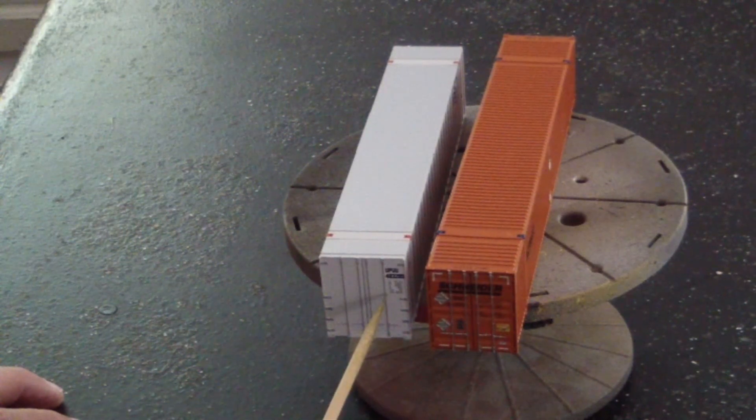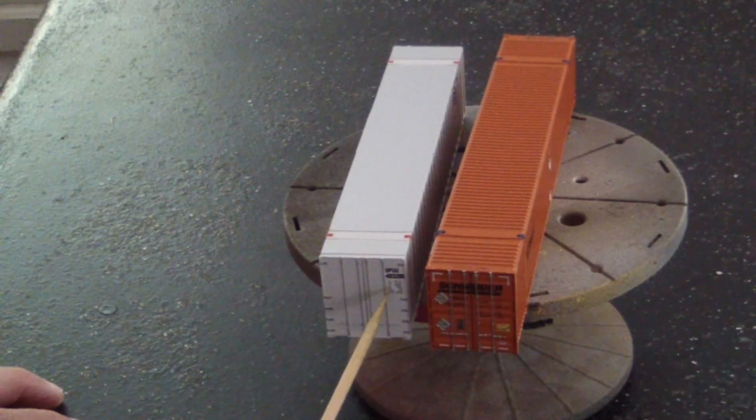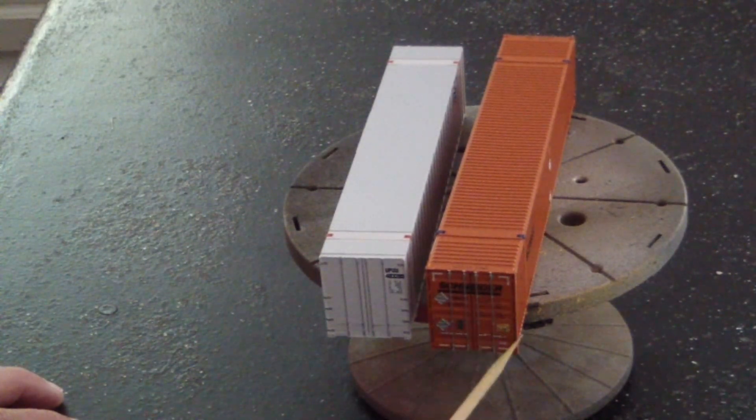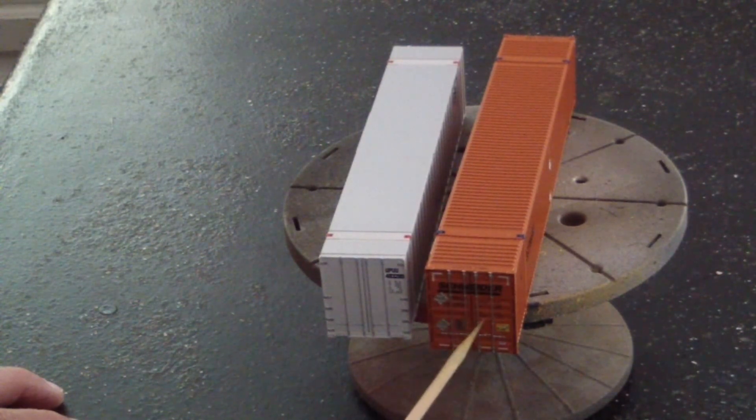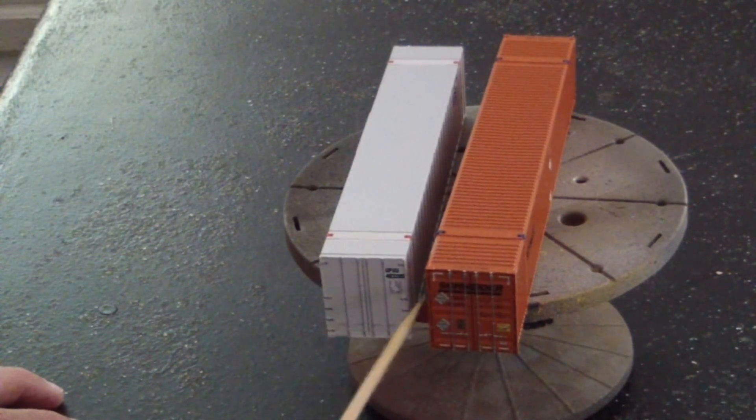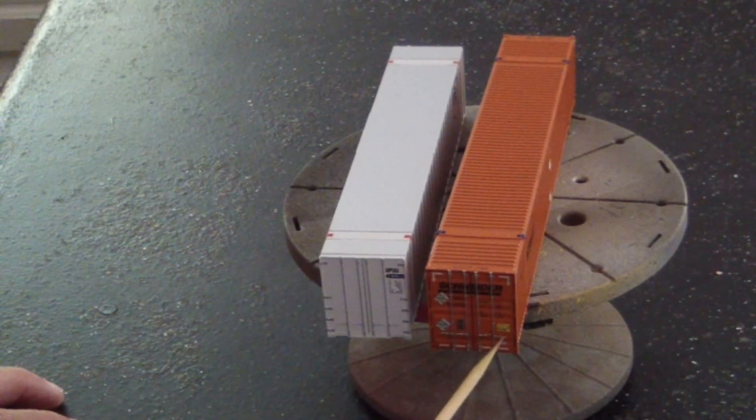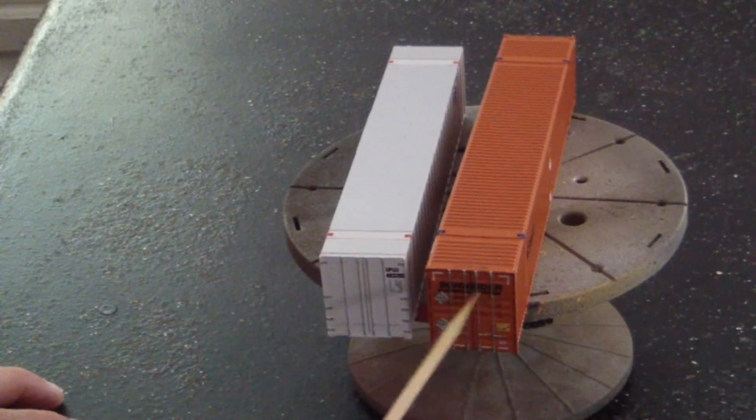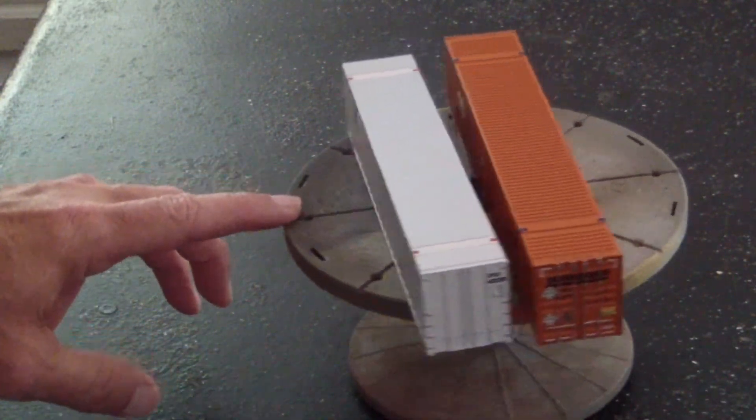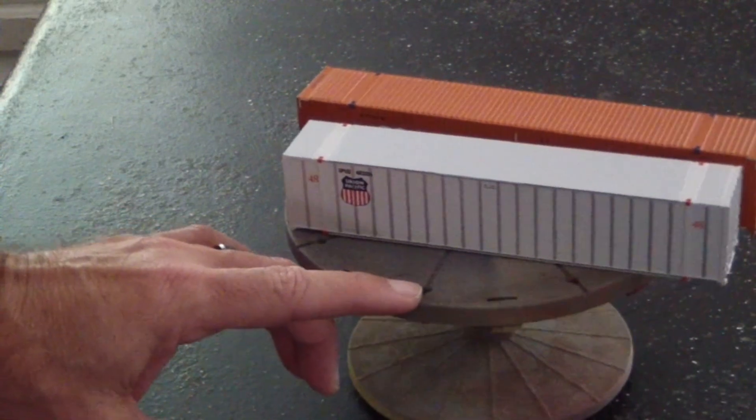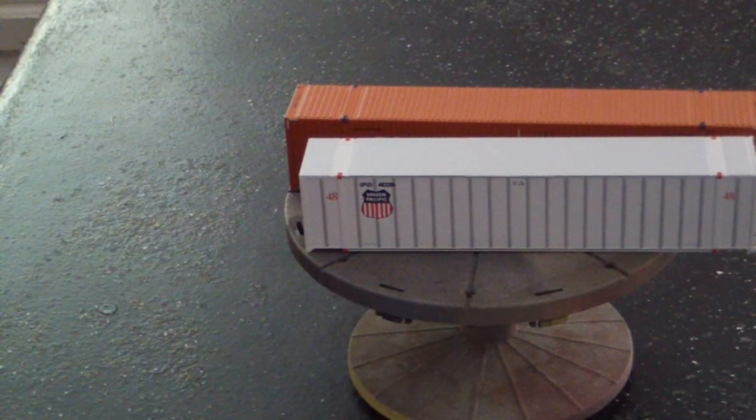Just this for an identification label, whereas you can see on the Scale Trains it has one, two, four bars on the door just like this, but it also has the placards and identification labels. There's a little bit more detail on the Scale Trains than there is the Class One Model Works. For myself, the nod on this would have to go to Scale Trains.